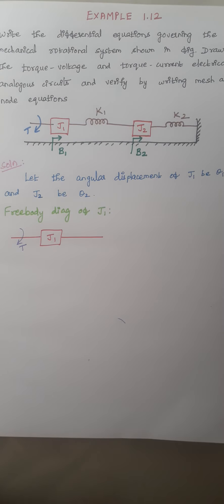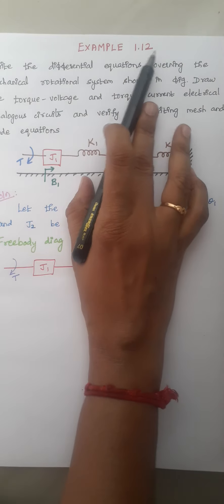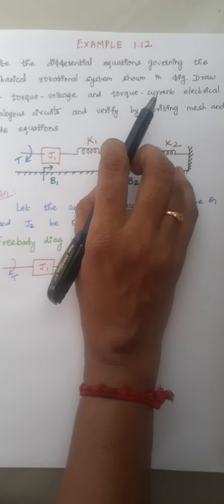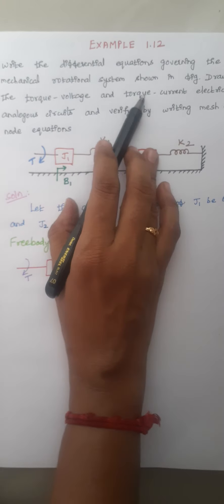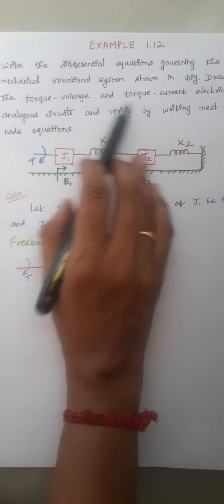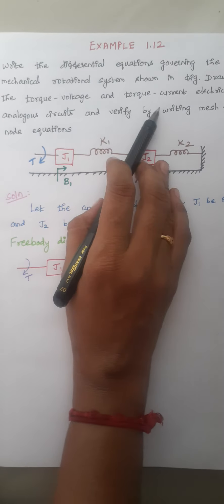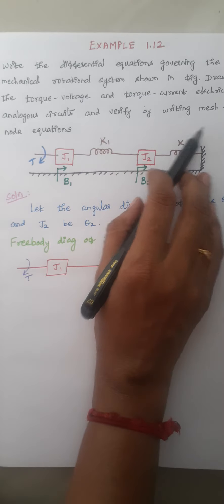Hello students, I am Kousalya. Today we are going to solve example 1.12 in control systems. The problem is: write the differential equations governing the mechanical rotational system shown in the figure. Draw the torque-voltage and torque-current electrical analogous circuits and verify by writing mesh and node equations.